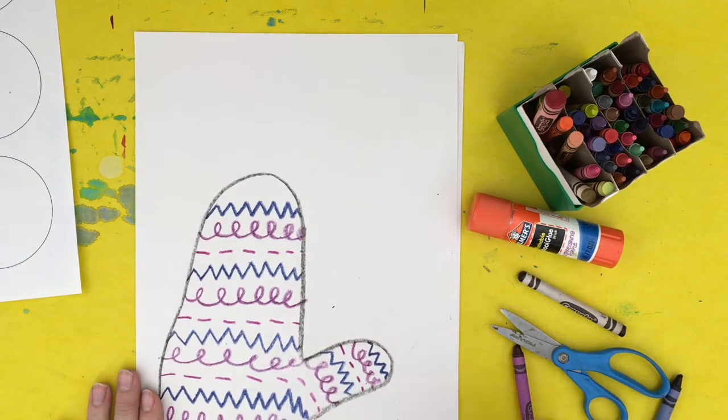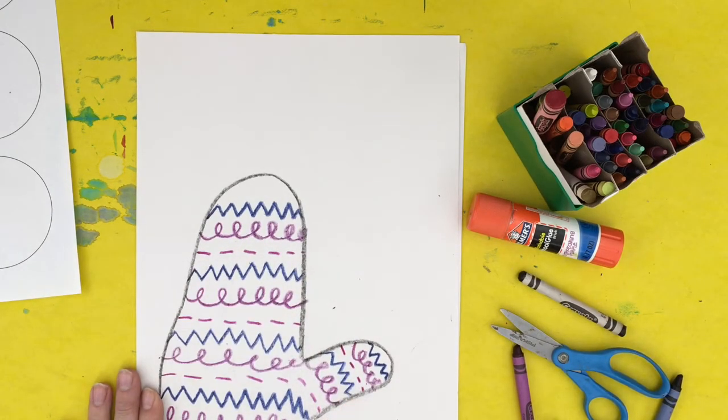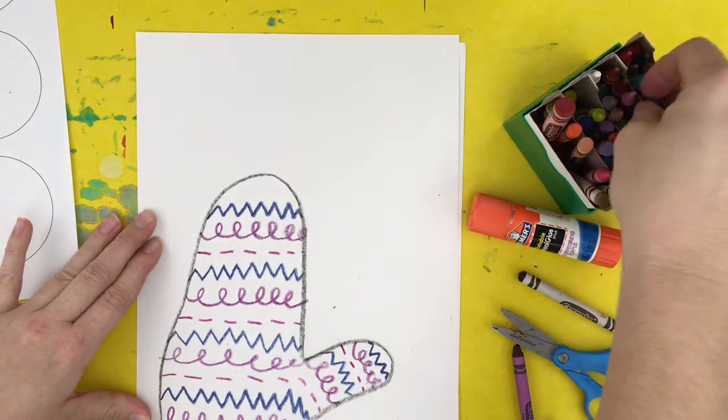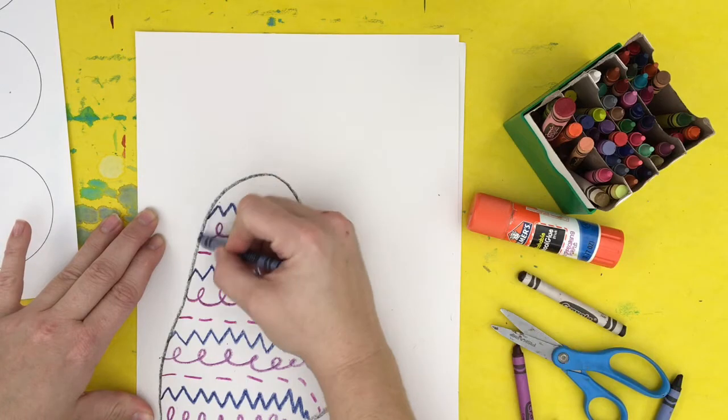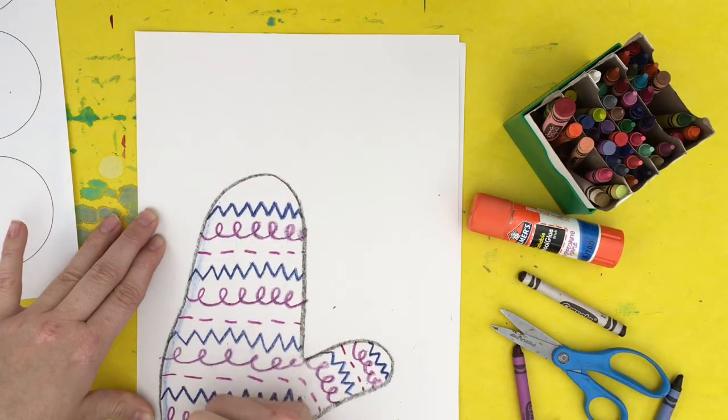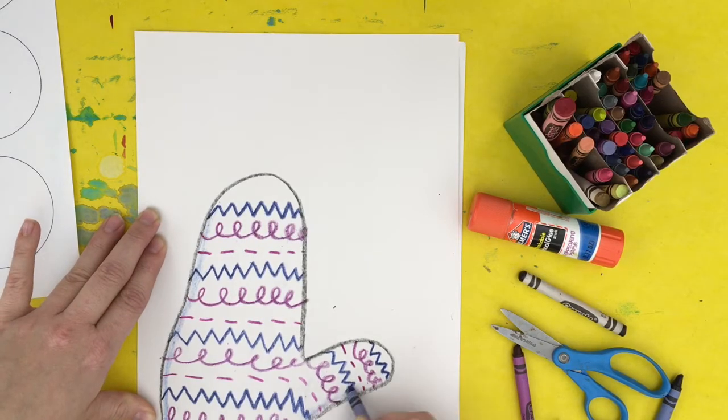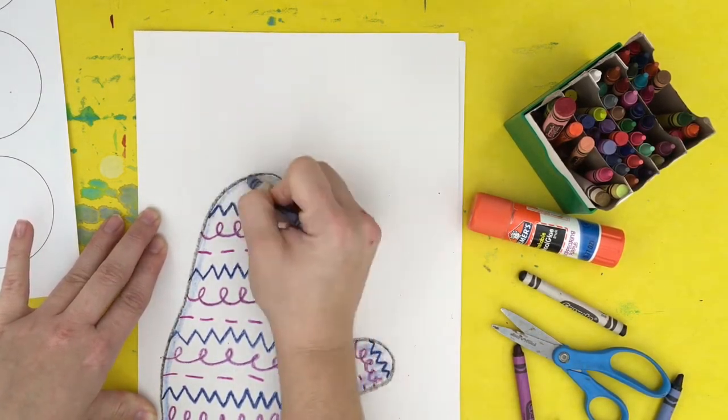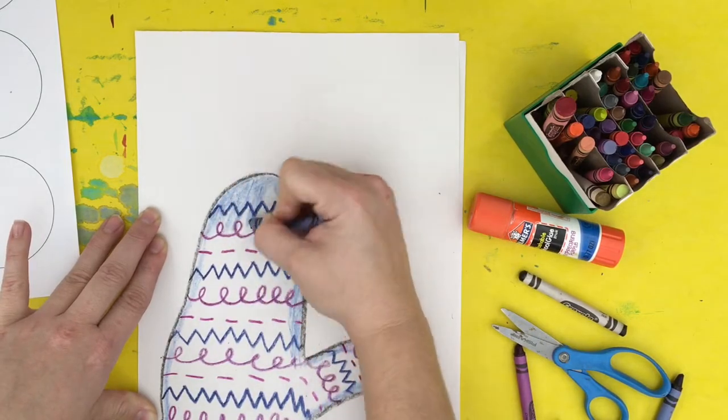After I fill my entire mitten up with lines and patterns I'm going to pick another color. This time I'm going to color very light. I'm going to go around the outside, pressing really light. After I go around all of the outside I'm going to start to take steps.